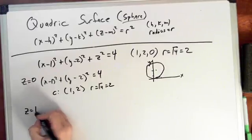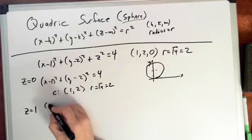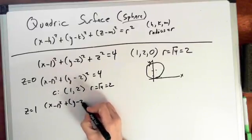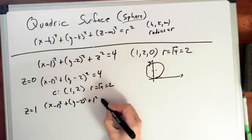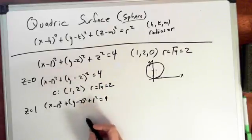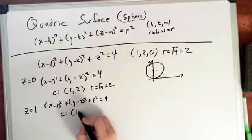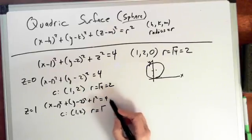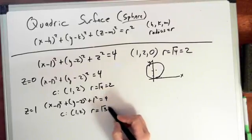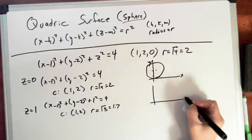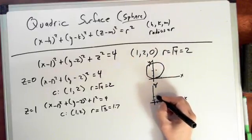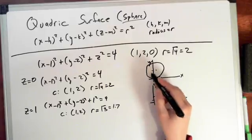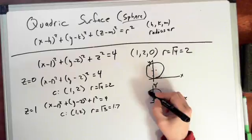Now let's set z equal to 1 and see what we get. We have x minus 1 squared plus y minus 2 squared plus 1 squared is equal to 4. The center is still at 1 and 2, but moving that 1 over, the radius is equal to the square root of 3, which is approximately 1.7. So let's plot that — same center, but this time with a radius of 1.7, so it's a little bit smaller.